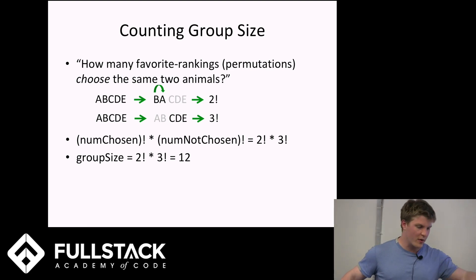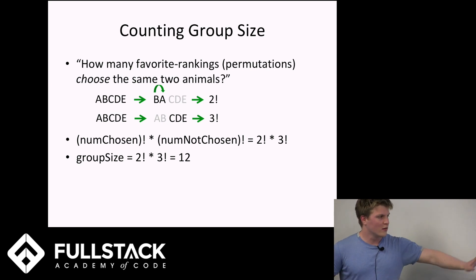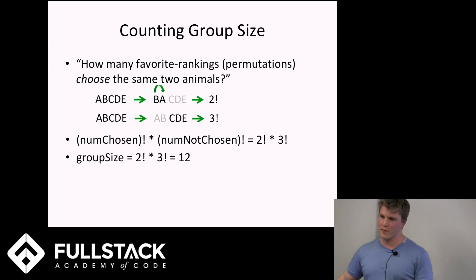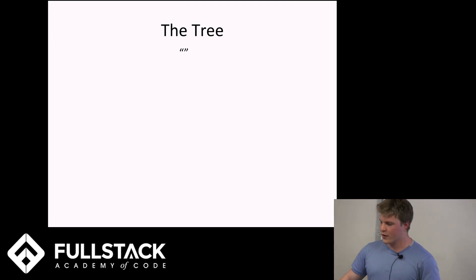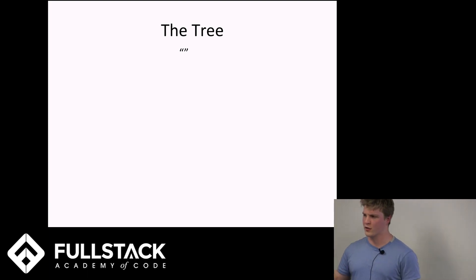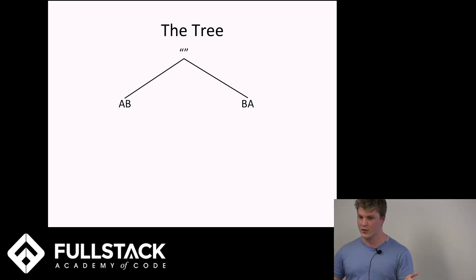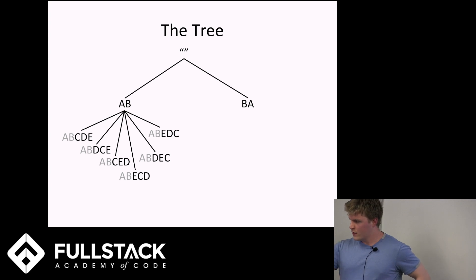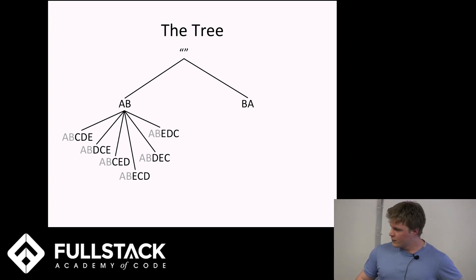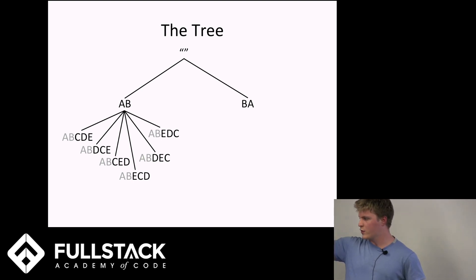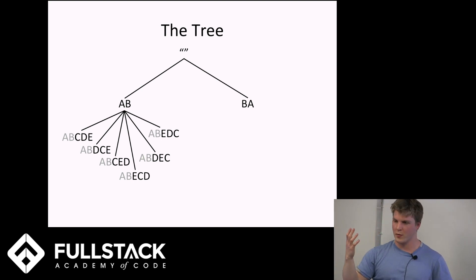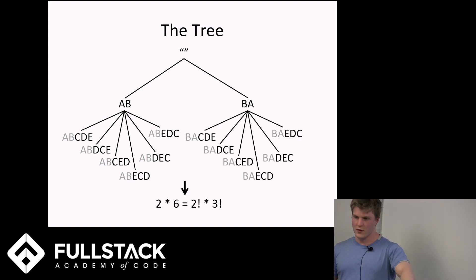That's how it was explained to me in undergrad, but I think a decision tree is actually an easier way to conceptualize it. A student who's going to end up in the aardvark–blue whale group has two ways to choose those two animals first, then six ways to arrange the remaining three. So the number of paths into the aardvark–blue whale group is the number of ways to permute AB times the number of ways to permute CDE — two factorial times three factorial equals 12.